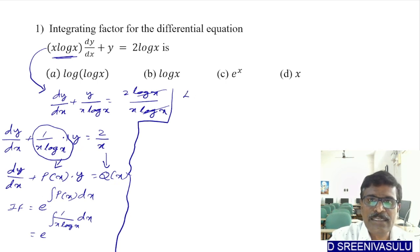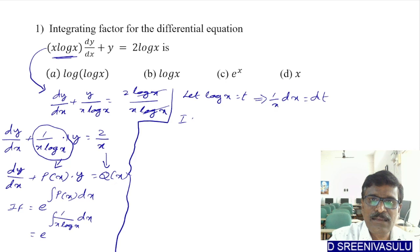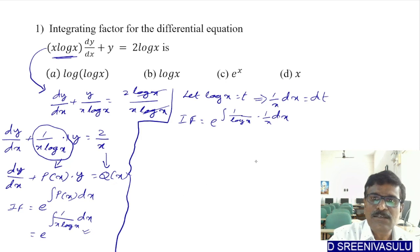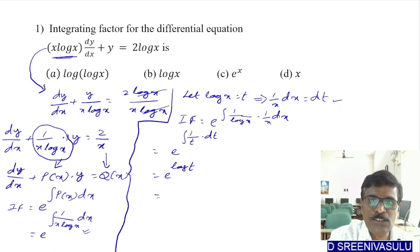To solve the integral, let log(x) = t, so (1/x)dx = dt. Then the integrating factor becomes e^(∫(1/t)dt) = e^(log t). Since e^(log t) = t and t = log(x), the integrating factor is log(x).